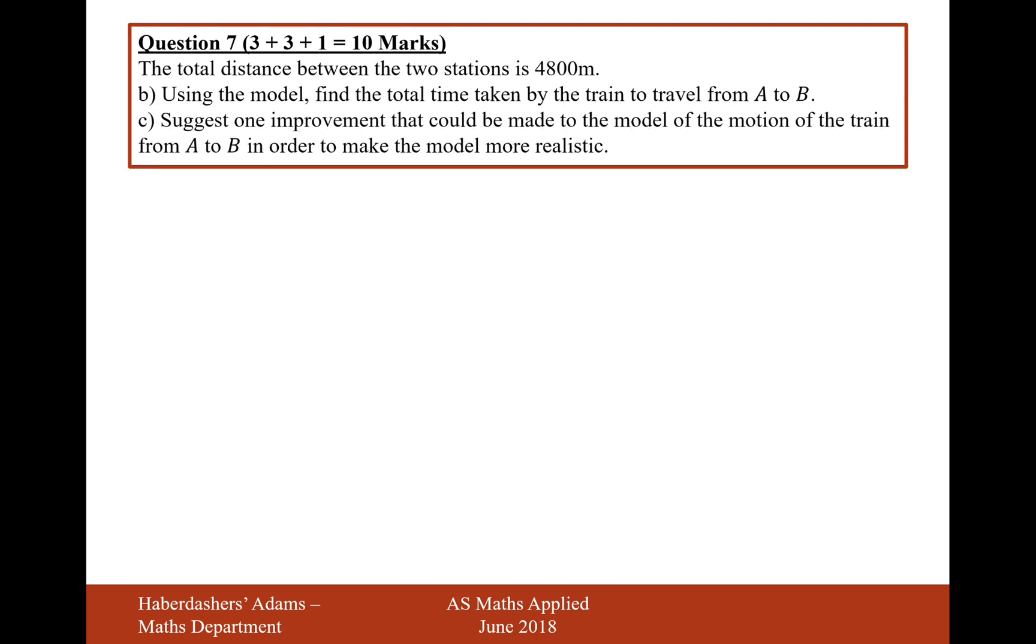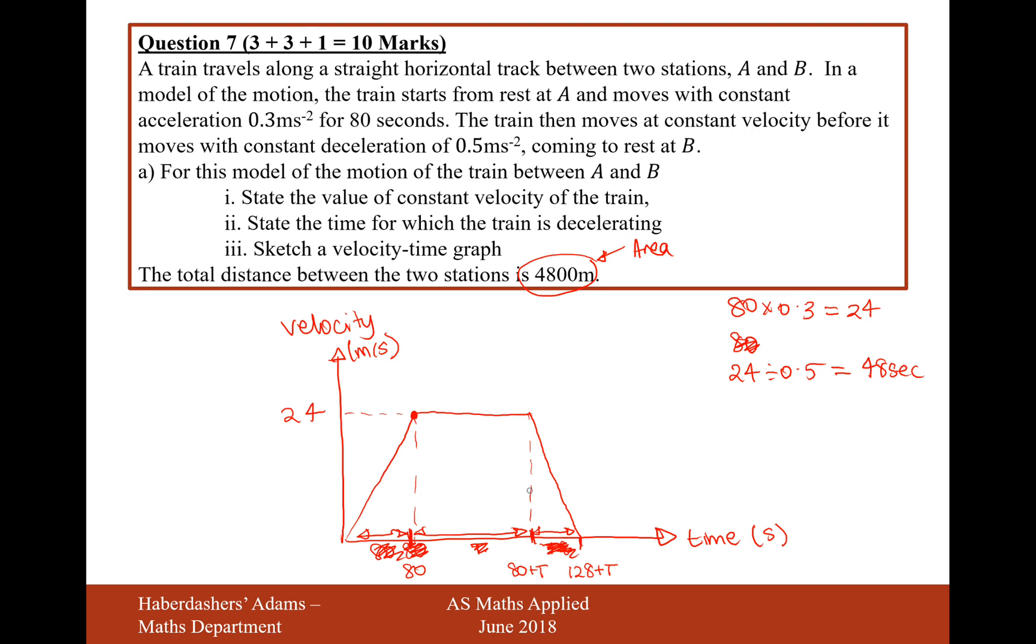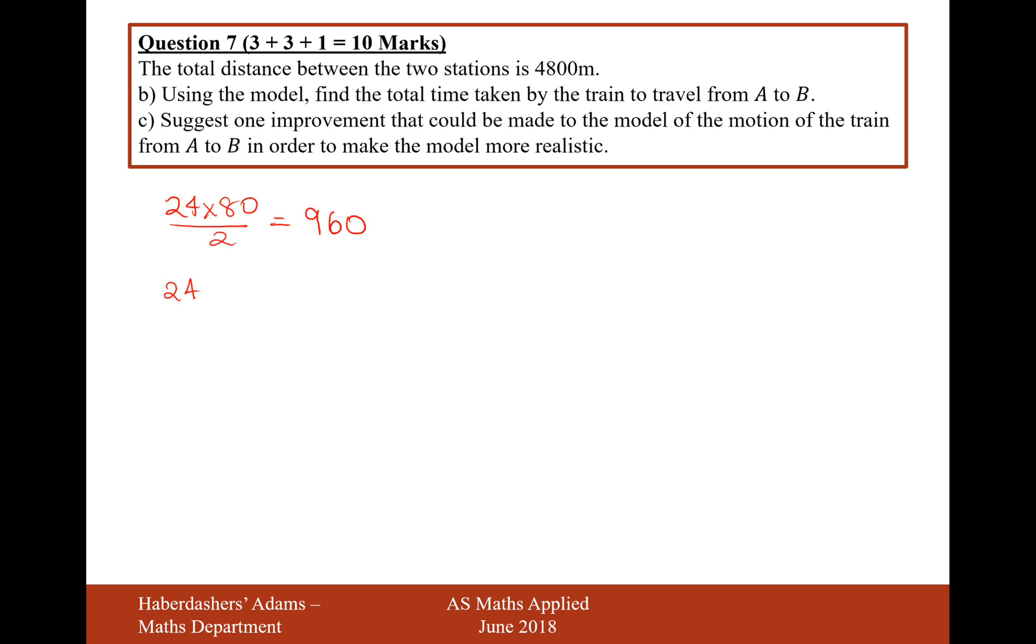So for my triangle on the left-hand side, it's going to be 24 times 80 divided by 2. That equals 960, so that's the left-hand triangle. On the right-hand triangle, it's going to be 24 on the height and 48 on the base. So 24 times 48 over 2. We're dividing by 2 here because it's a triangle. 24 times 48 divided by 2 is 576.